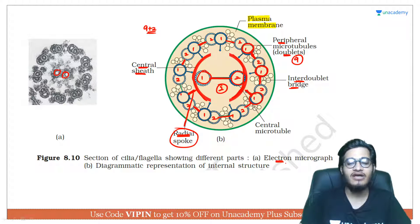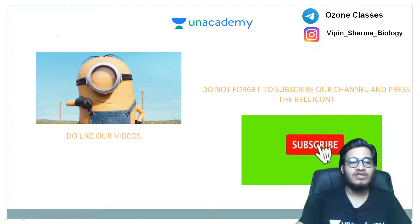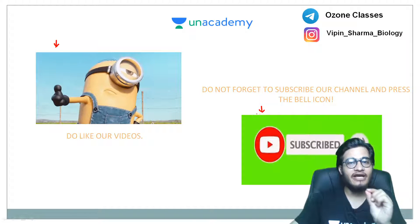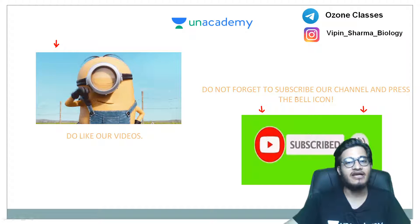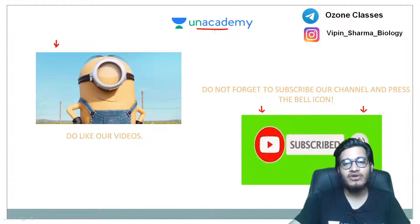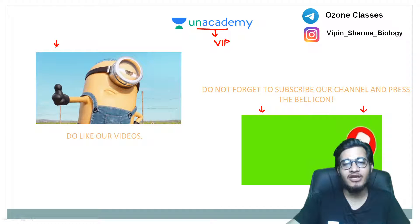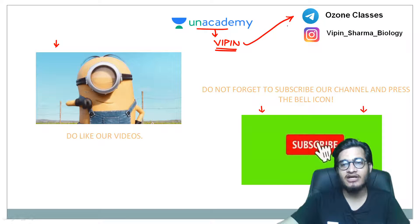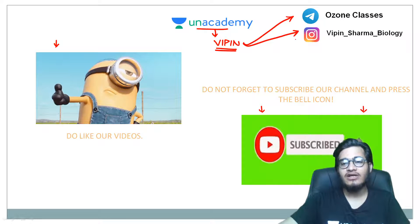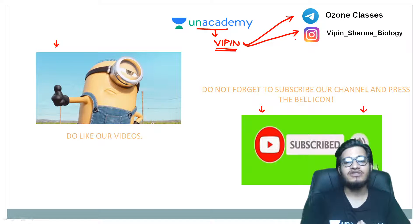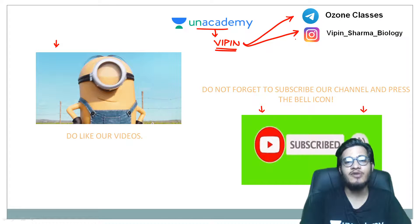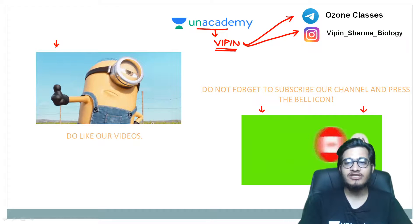This was the cartoon diagram, and this is the original diagram as seen in an electron micrograph. So these are cilia and flagella — I hope you got the video very well. If you understood the video, please like it, subscribe to the channel, and press the bell icon. If you want to take an Unacademy Plus subscription, use the code 'vipin' to study with me live on Unacademy. You can also find me on the Telegram channel 'Ozone Classes' or Instagram handle 'Vipin Sharma Biology'. Thank you so much, guys — lots of love, and I'll catch you in the next video.